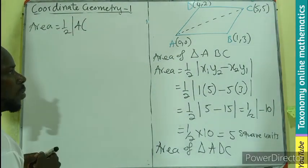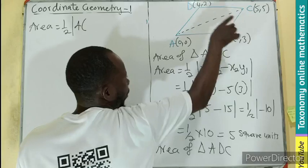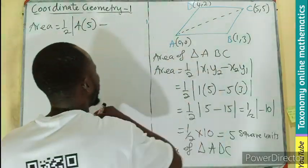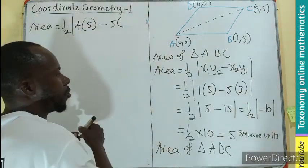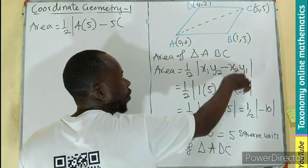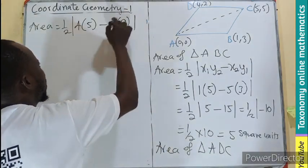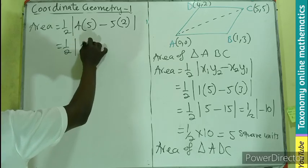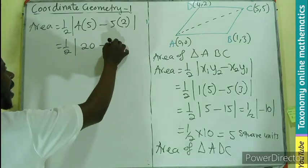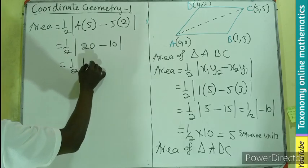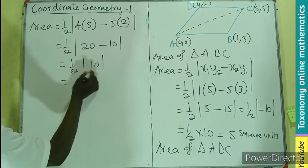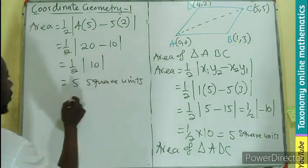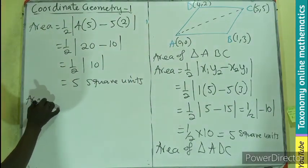Our x1 will be 4, multiplying y2, which will be 5, minus x2, which will also be 5, multiplying y1, which will be 2. So the absolute value is 20 minus 10, which is 10. That will be 5 square units.